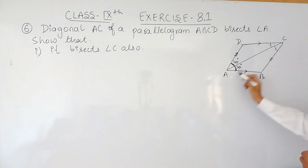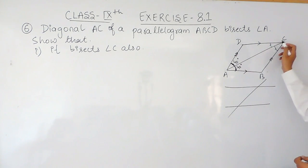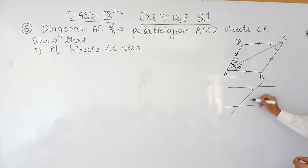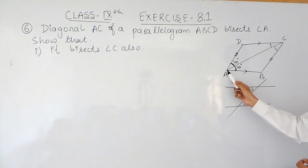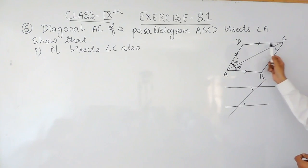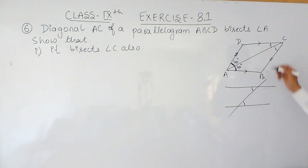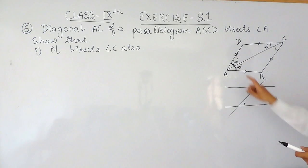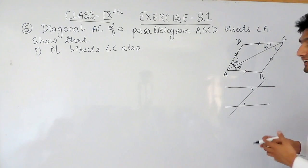DC and AB are parallel lines and AC is a transversal. So this angle must be equal to this angle — these are alternate angles, forming a Z-shape. The angles inside this Z must be equal. So this angle must also be equal to 40 degrees because this one is 40 degrees. These values are assumed just to make it easier to understand.